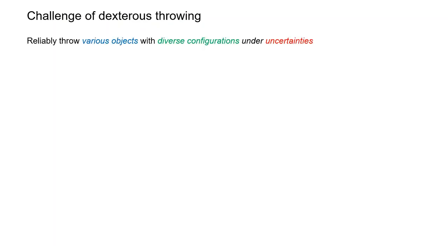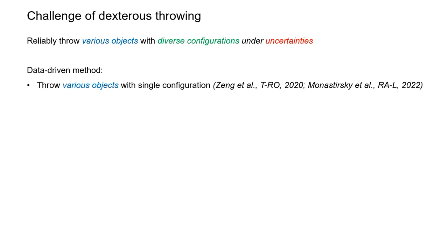Within the regime of dexterous throwing, it is very challenging to reliably throw various objects with diverse configurations under uncertainties. While one can use data-driven methods to train the robot to throw various objects with single configurations, it would require a large amount of real throwing data for diverse configurations.